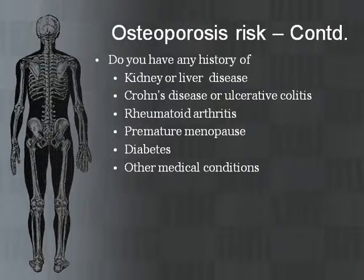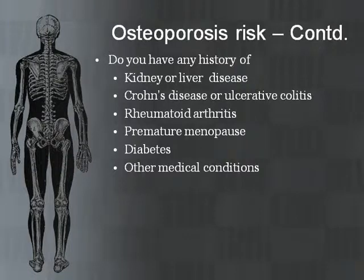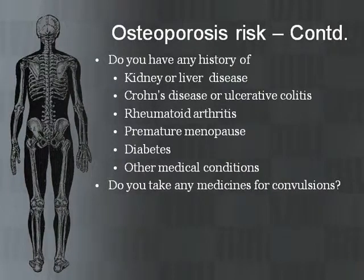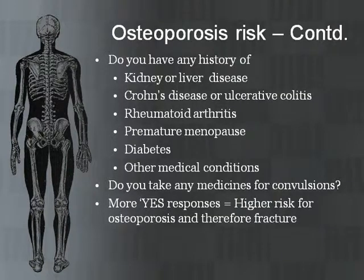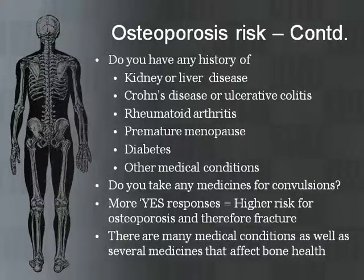Do you have any history of the following: kidney or liver disease, Crohn's disease or ulcerative colitis, rheumatoid arthritis, premature menopause in the 30s or early 40s, diabetes, or certain other medical conditions? Do you take any medicines for convulsions or fits? The more yes responses you give, the higher your risk for osteoporosis and fracture. There are many other conditions and medicines that can also affect bone health, but those are beyond the scope of this presentation.